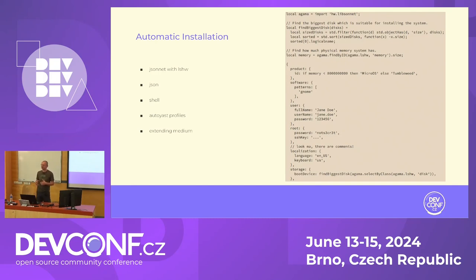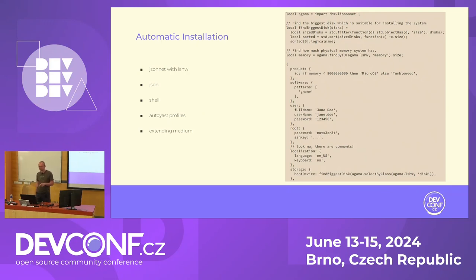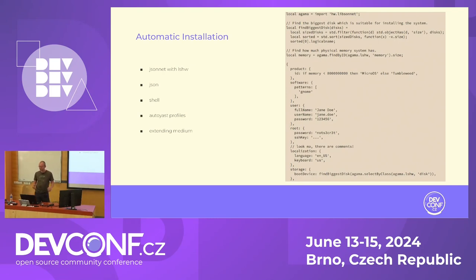For example, the dynamic profile can find the biggest disk and mark it as the primary one for the system, and also select a product. Agama can install multiple products — on the demo I'll show that we have MicroOS and Tumbleweed on one ISO. The dynamic part can find how much memory the system has: if it has less than 8 gigabytes, install MicroOS; if more, install Tumbleweed.